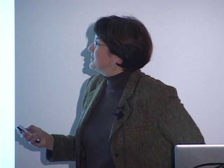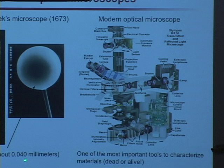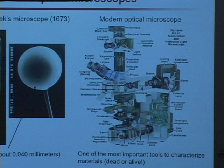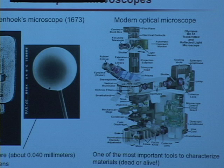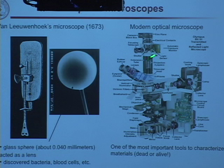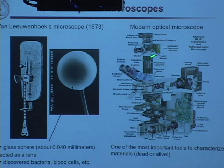Another thing that makes it hard to answer what atoms really look like is the fact that we can't really see them. Our eyes are detectors of visible light. The first optical microscope in 1673 was a small glass sphere about 0.040 millimeters — 40 microns, or 40,000 nanometers — that acted as a lens and was used to discover bacteria and blood cells, revolutionizing our understanding of the microworld. Modern optical microscopes are much more complicated and expensive, but remain one of the most important tools to characterize materials, whether living or non-living. Optical microscopes continue to be incredibly important.